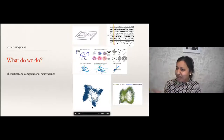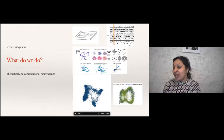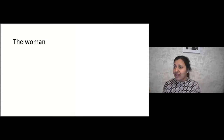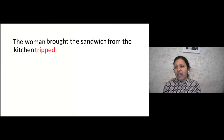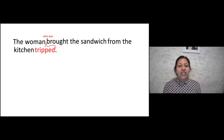It turns out this circuit is responsible for maintaining an estimate of compass direction as animals run around the world, giving them a sense of where they are even as they're turning. The circuit is also a memory circuit — it maintains this estimate of the same states in sleep and in waking. These are the kinds of things we do. We also work on questions about cognition and how it is that when we read a sentence like 'the woman brought the sandwich from the kitchen tripped' — this sounds really ungrammatical at first.